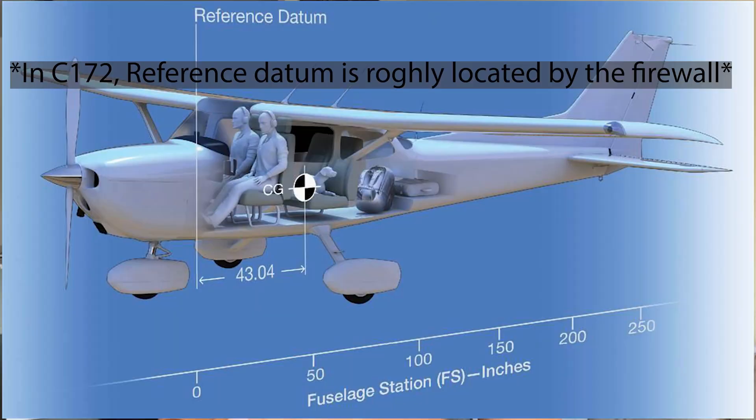The airplane's CG will be different each day depending on different factors, like the weight in the aircraft and the distribution of that weight across the aircraft. Any change in your location, your passengers' location, or your baggage will cause a change in CG. We measure the CG location with respect to the reference datum.